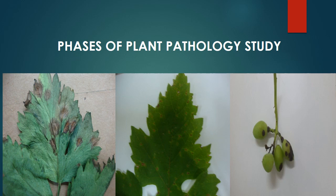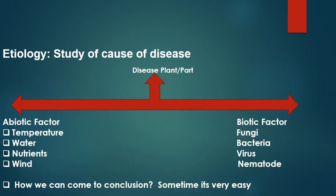Unless you have past experience of working on these diseases, you need to organize your study. The first step is to know what is the cause of the disease. Knowing the cause of the disease in plant pathology is called etiology, so etiology represents the first phase of any plant pathology study.